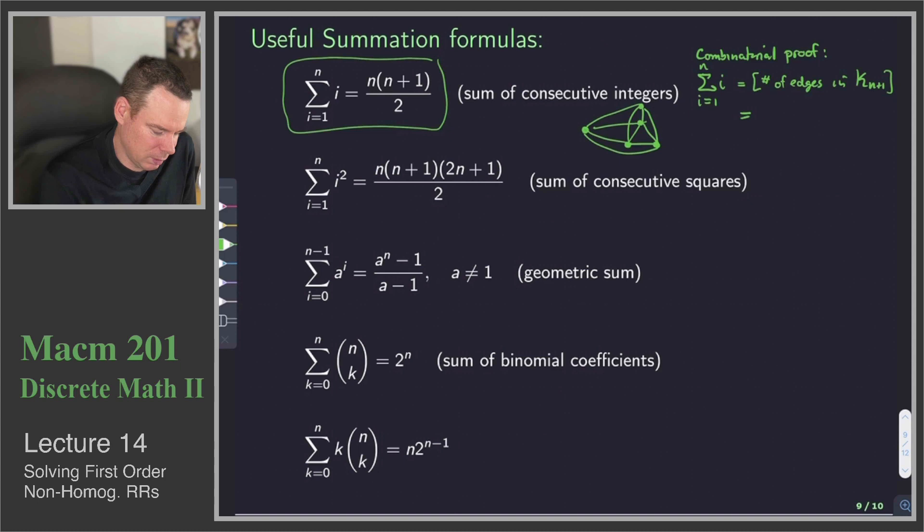But we also know that this is n plus 1 number of vertices choose 2. So the number of pairs of vertices you can choose, which is n times n plus 1 all over 2. And so there we go. We've got that identity for the sum of consecutive integers.